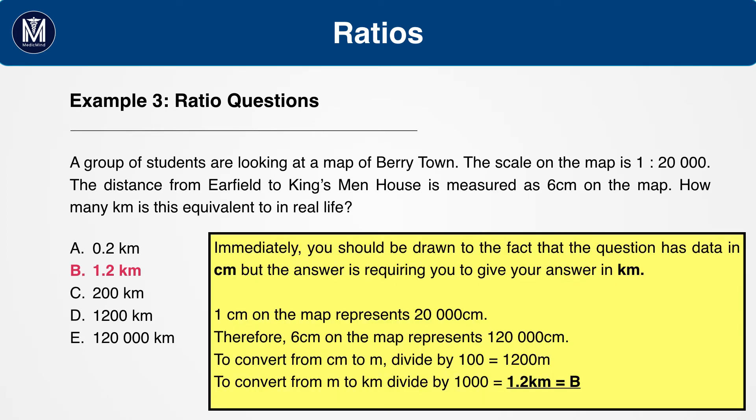The answer is b, 1.2 kilometres. First of all, bear in mind that the question gives you the distance in centimetres, but the question is actually in kilometres. The scale on the map is 1 to 20,000. Therefore, 1 centimetre on the map represents 20,000 centimetres.